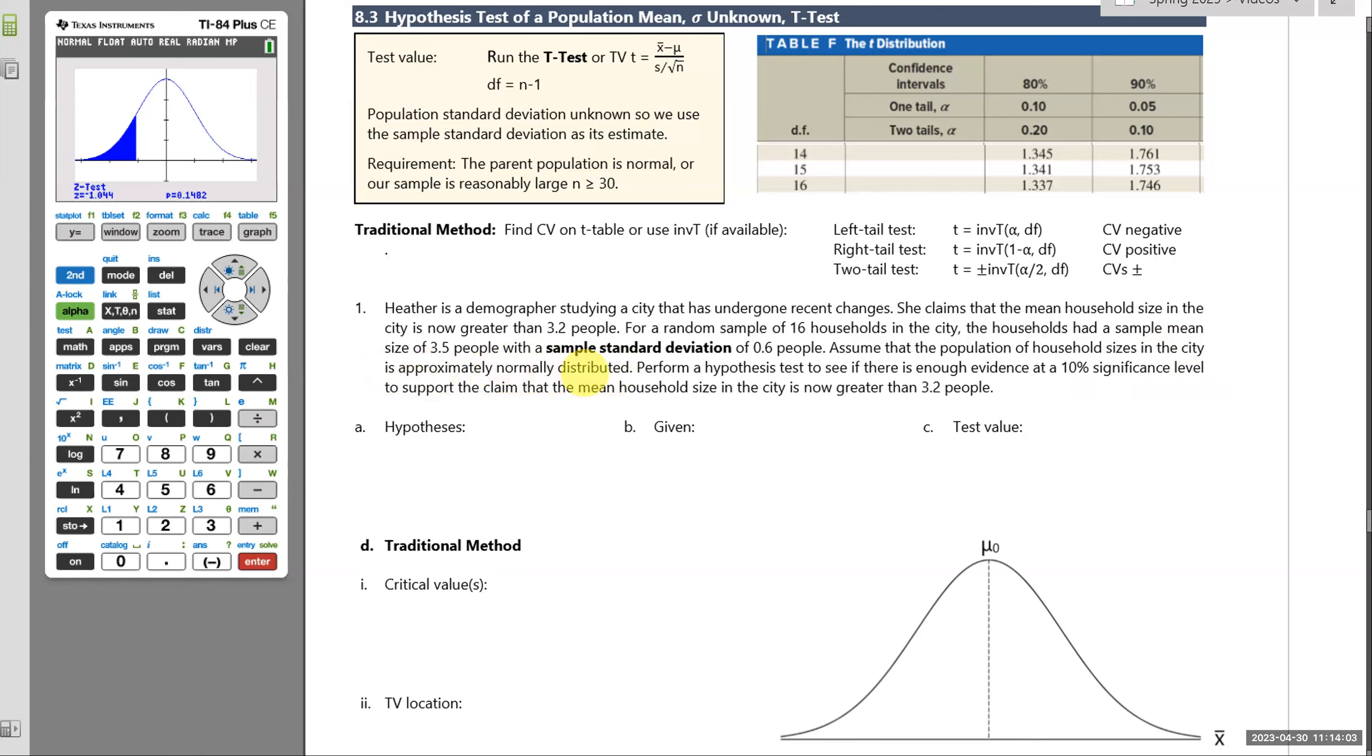Assume the population of household sizes in the city is approximately normal. That part is required because 16 is a small sample size. So the parent population needs to be normal, or if our sample size is reasonably large, that would be okay as well. But we only have 16 households. So they have to tell us our parent population is normal. Perform a hypothesis test to see if there is evidence at a 10% significance level to support the claim that the mean household size in the city is now greater than 3.2 people.